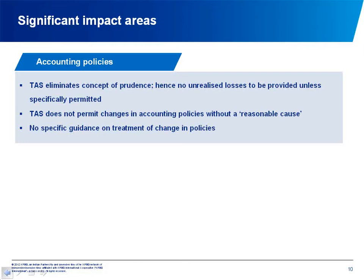One good example where unrealized losses still continue is inventory valuation — the TAS continues to provide that inventory must be valued at cost or NRV, whichever is lower. But in other areas, such as unrealized losses on onerous construction contracts, this will no longer be permitted. The TAS also states that you cannot change an accounting policy unless there is a reasonable cause. This could be very judgmental and result in disputes between tax authorities and companies. The TAS currently does not provide guidance on how the effect of a change in accounting policy should be treated in the computation of income.